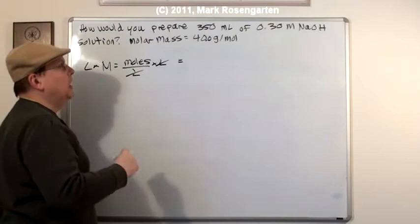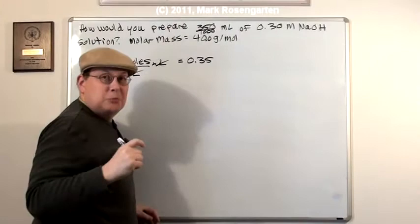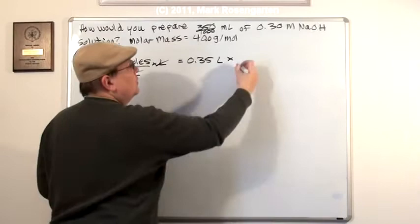Again, we've got 350 milliliters. We need to turn that into liters. Divide that by 1,000. That's 0.35. And I'm going to leave that zero off because it was no decimal point in the example you sent me. So that would be in liters. Times the molarity of the solution is 0.30 moles per liter.